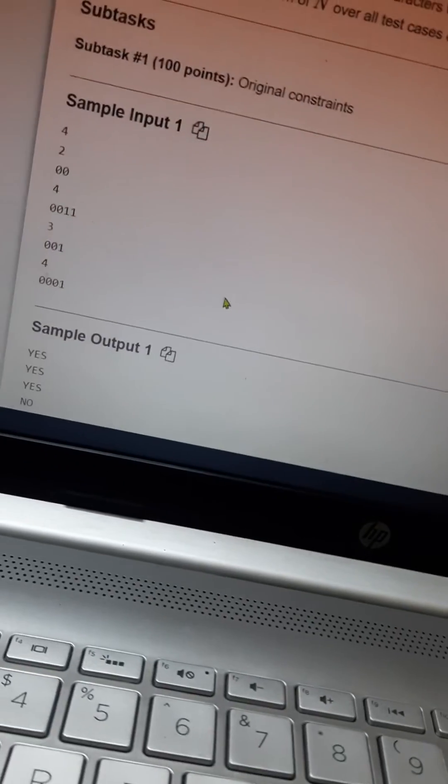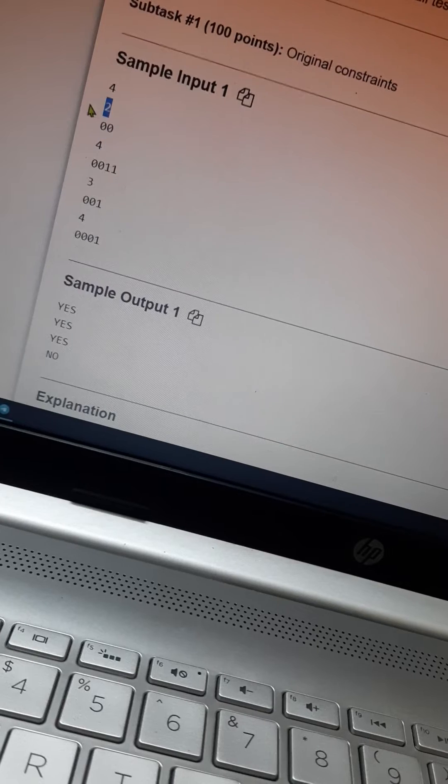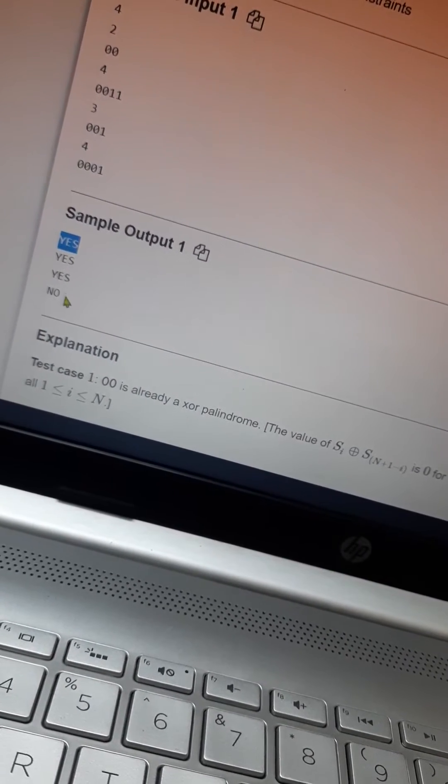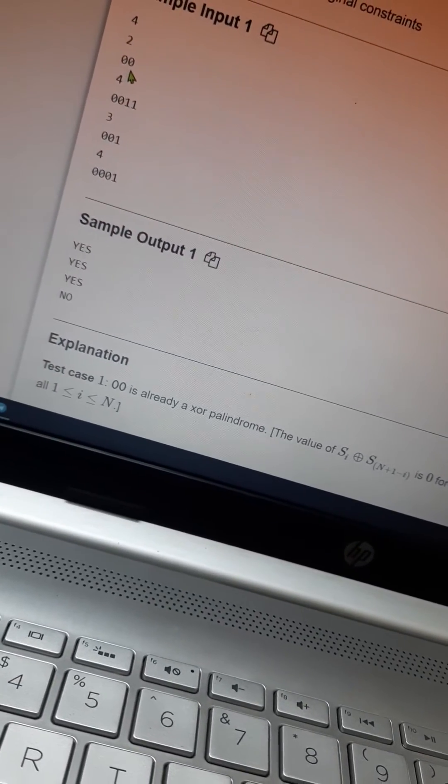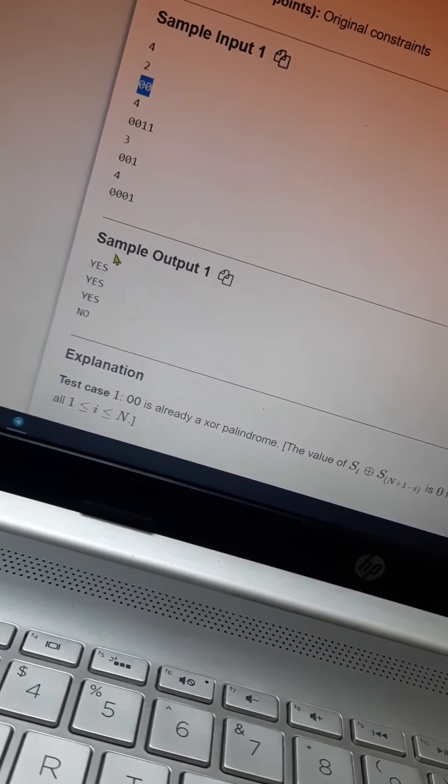So the question is: we will be given an input string of length N. We should print yes or no. If we can modify the given string into an XOR palindrome, we print yes. If we cannot modify, we should print no.